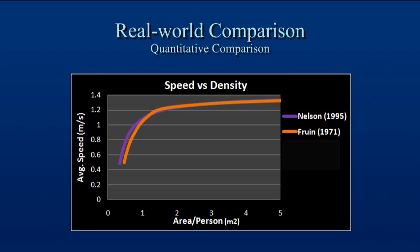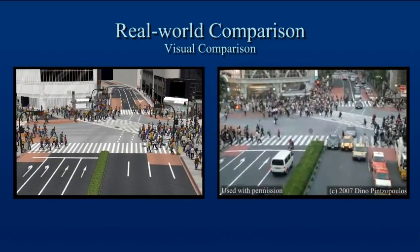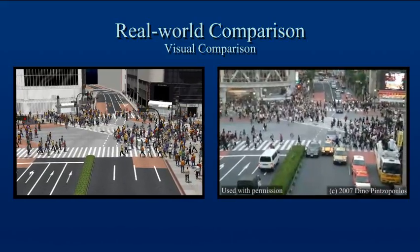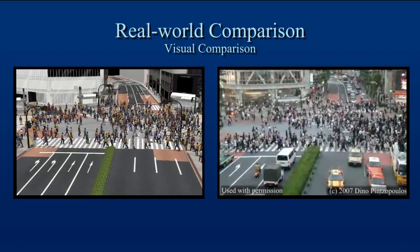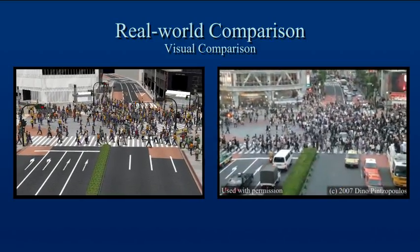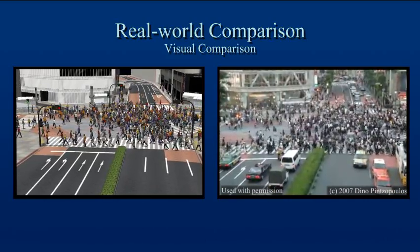We now compare the results of our method to those from real humans walking. Here is data from various researchers on how increasing density slows down people's walking speed. When that same data was collected from a PLE simulation, the results match closely with those from the human studies. Finally, we present a side-by-side comparison of actual footage taken at the intersection near Shibuya Metro Station in Tokyo. The overall pattern of movement in the simulation is very similar to that seen in the actual footage. Both cases show lane formation, dispersal to reduce congestion, and continuous flow.